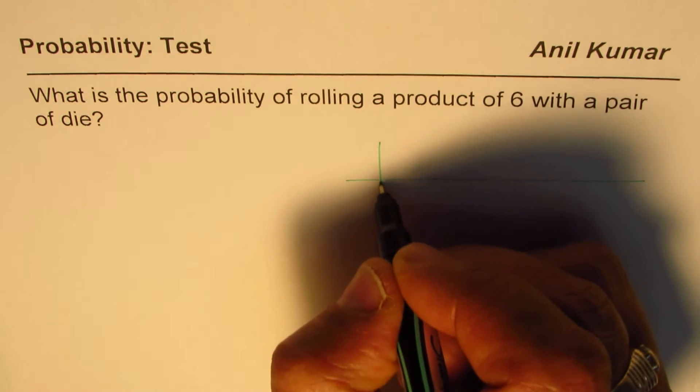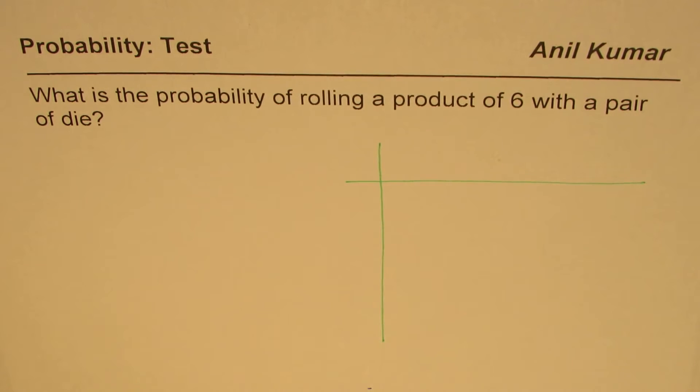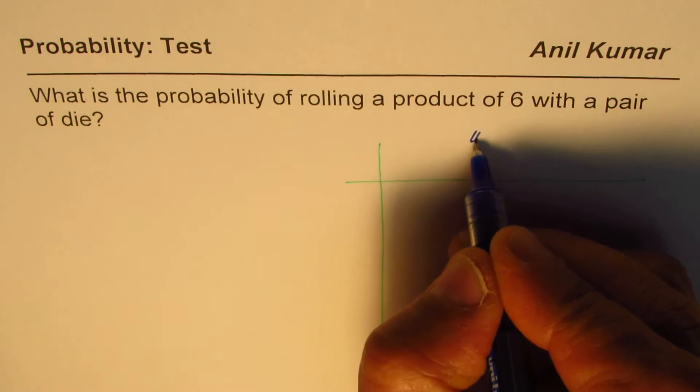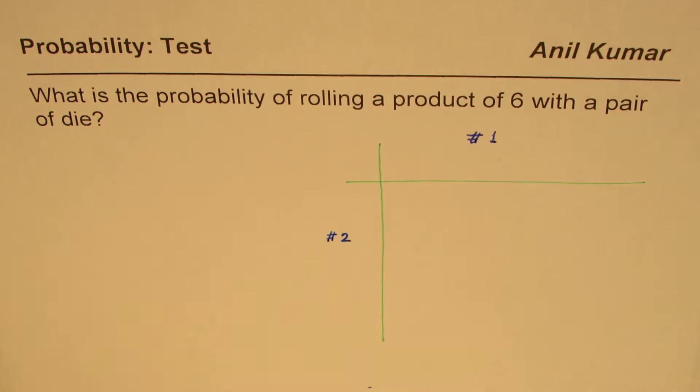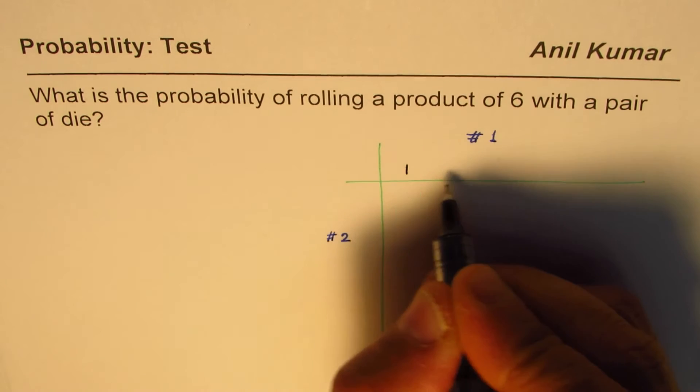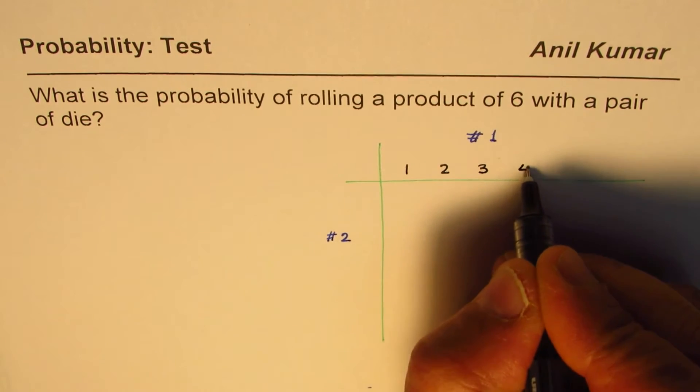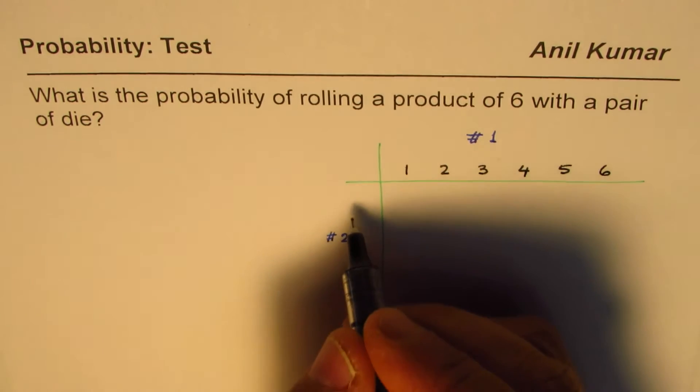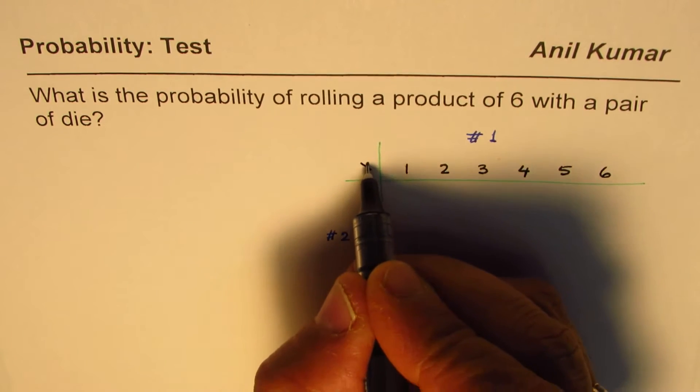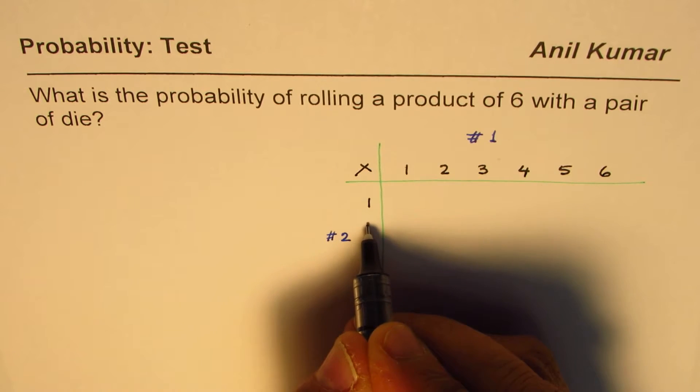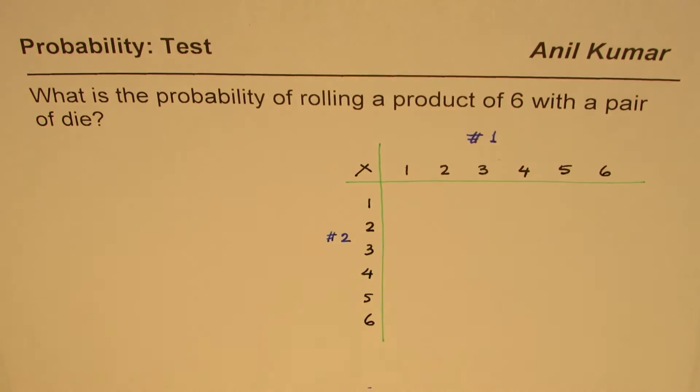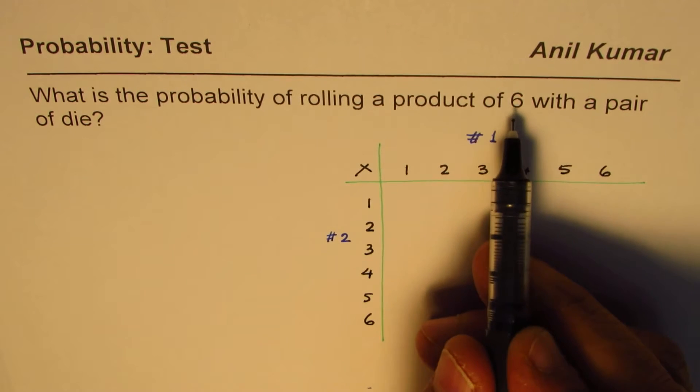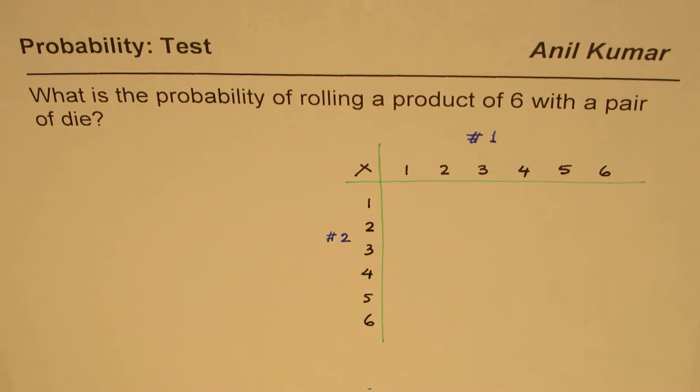So what we can do is make a matrix for rolling a pair of die. On one side we can write numbers related to the first die, and on the other side we can write numbers relating to the other. So the numbers are 1 to 6: 1, 2, 3, 4, 5, 6. The operation is times. The numbers on the second die will be 1, 2, 3, 4, 5, 6. Now we are looking for products of 6.